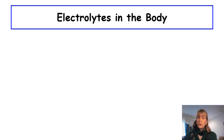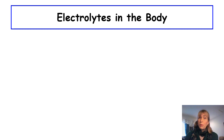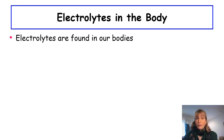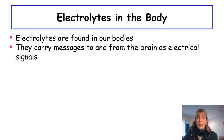Now that we've refreshed our memory on the different types of electrolytes, let's apply that to the body, because that's the goal of the course. This slide is entitled 'Electrolytes in the Body.' Electrolytes are in fact found in our bodies. What do they do? They carry messages to and from the brain as electrical signals, because electrolytes dissolved in water carry electrical charge.